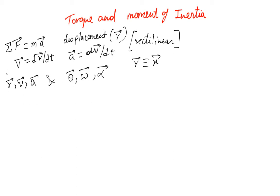So what is the analogous equation for Newton's second law in the angular system? This is in the rectilinear system. The analogous equation in the angular system is: tau equals I alpha. This is the analogous equation.